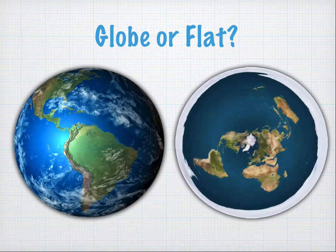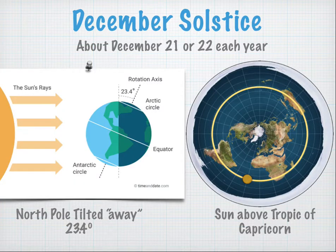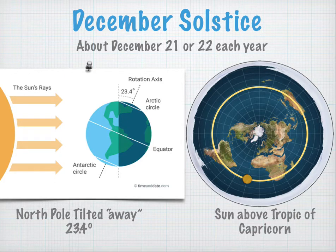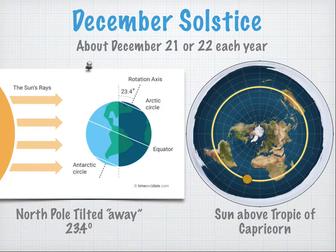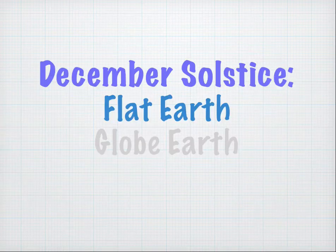So do your azimuths indicate a globe earth or a flat earth? On the globe earth model, on the December solstice, the north pole is tilted away 23.4 degrees, meaning the Tropic of Capricorn is receiving direct rays from the sun. On the flat earth map, the sun is simply above the Tropic of Capricorn. Now let's take a look at a flat earth versus a globe earth analysis.